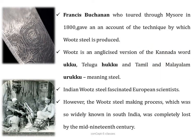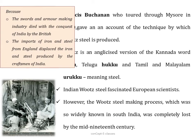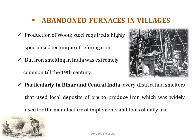However, the wootz steel making process, which was widely known in South India, was completely lost by the mid-19th century. It was because the swords and armor making industry died with the conquest of India by the British, and the import of iron and steel from England replaced the iron and steel produced by the craftsmen of India. The production of wootz steel required highly specialised techniques of refining iron, but iron smelting in India was extremely common till the 19th century — particularly in Bihar and Central India, where every district had smelters using local deposits of ore to produce iron widely used for making tools of daily use.